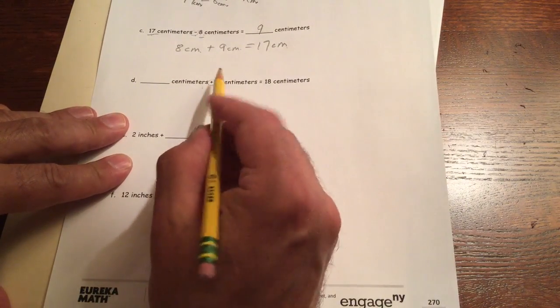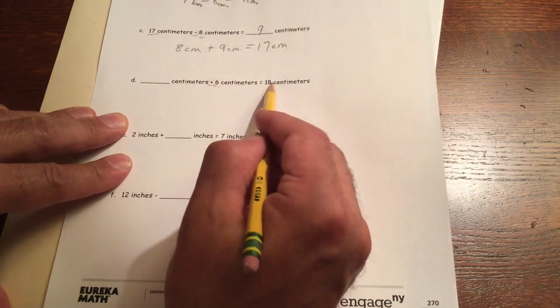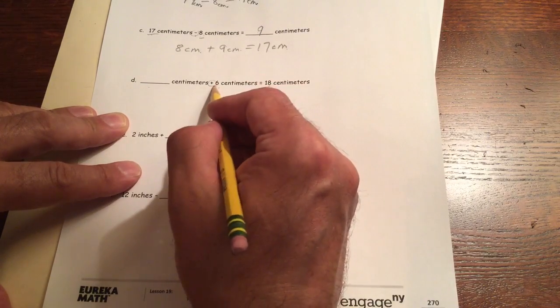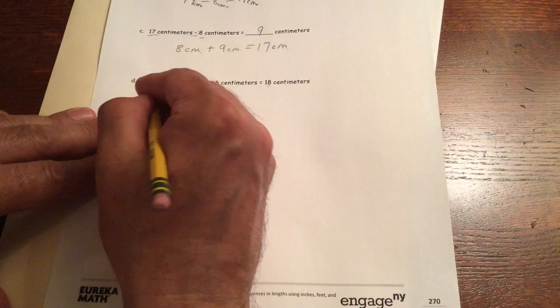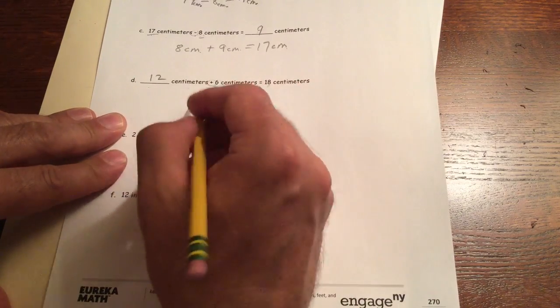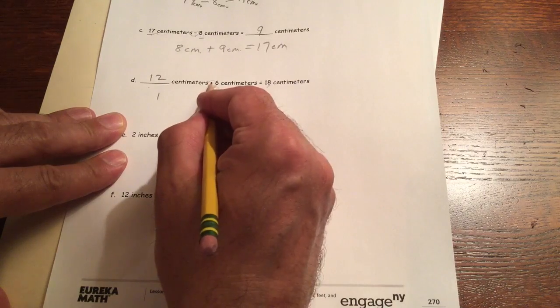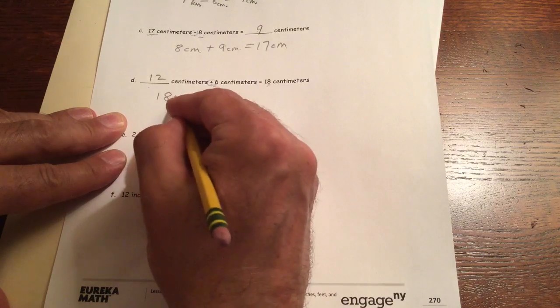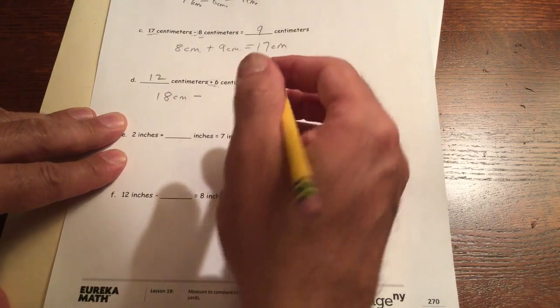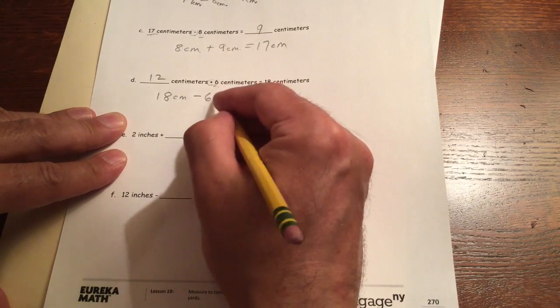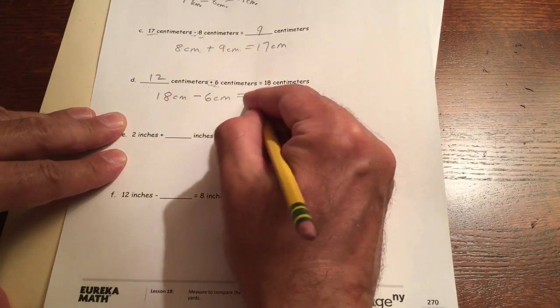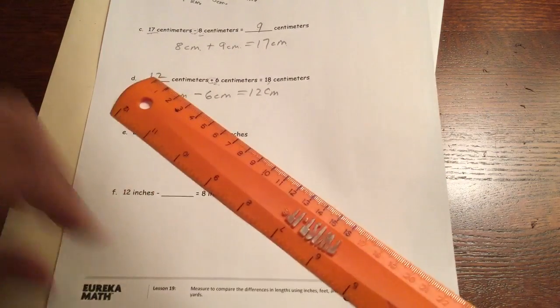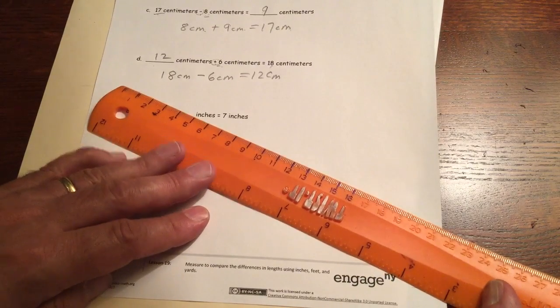Now here we have addition and we have a missing addend problem. We have the sum. So 18, what do we need to add to 6 to make 18? 12. And you can check this with subtraction because now we have addition. We're going to check it with subtraction. 18 CM minus 6 CM equals 12 CM. And you can check that right on your ruler.